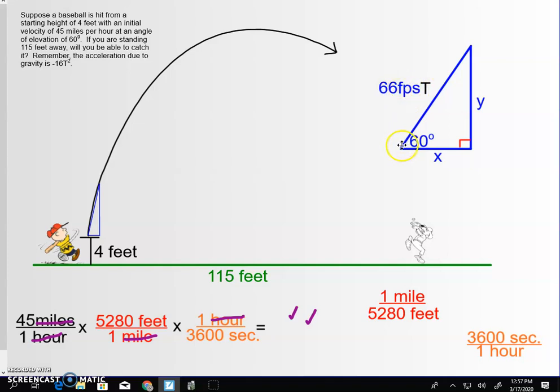I now have converted this hypotenuse into a length, not a rate. It's 66 feet per second times the number of seconds.